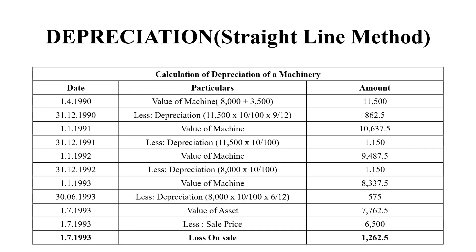So this is our working note. We need to create a new ledger for December 1990. From 1st April 1990 to 31st December 1990 is 9 months. So on 9 months, depreciation on 11,500 at 10% is Rs. 862.50. Now on 1st January 1991, the value of machinery is Rs. 10,637.50 — that is Rs. 11,500.00 less Rs. 862.50.